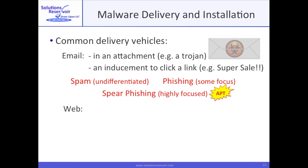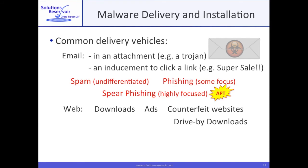APTs do research and develop very targeted messages. For example, the root of a well-publicized breach of a security firm was a superbly targeted spear phishing email with an attachment containing what was then a zero-day exploit of Adobe Flash. On the web, you can encounter malware embedded in downloads and ads or on counterfeit websites. You can even encounter malware without clicking on anything, called a drive-by download.